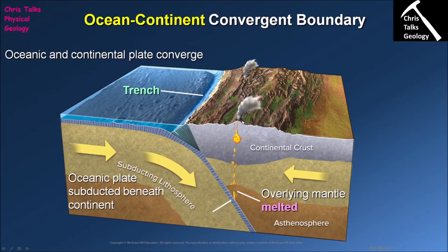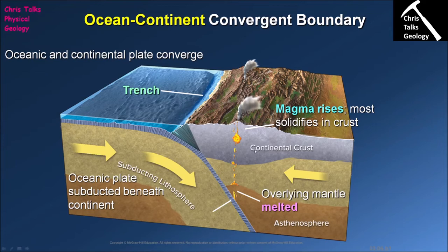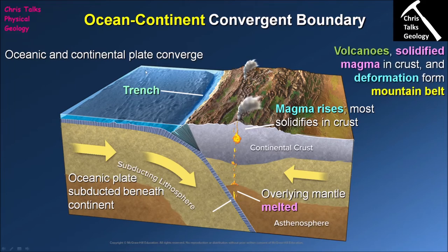The resulting magma rises through the mantle and through the continental crust, feeding volcanoes at the surface that are part of the mountain range. Importantly, the vast majority of magma never makes it to the surface — it gets trapped en route. This means these mountain belts are absolutely packed with intrusive igneous rocks, which are igneous rocks that form when magma cools down slowly underground. A classic example would be granite.